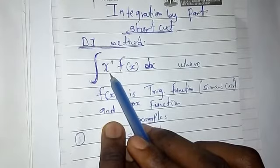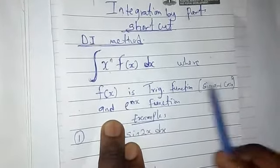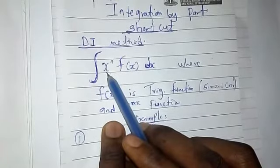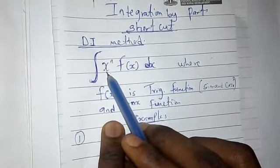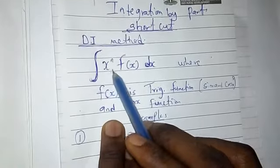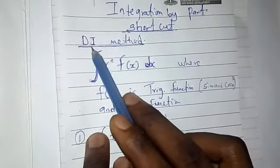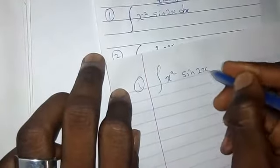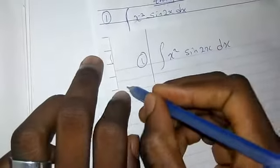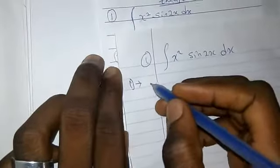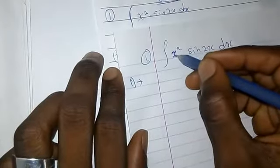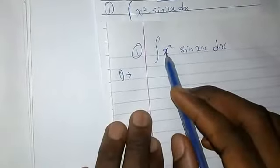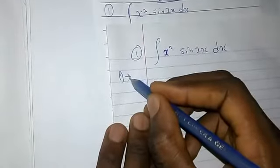So if you are given such an integration where f(x) is sine or cosine and you have an algebraic function, you can use this DI method which I'm going to treat here today. Let's start from number one: the integral of x squared times sine(2x) dx. Your D column — the differentiation column — check my video on how to choose u and v. You choose the algebraic function as your D.